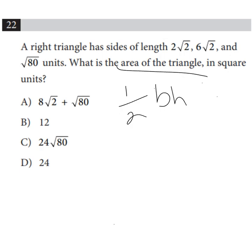They also give us that the right triangle has sides of length 2 times square root of 2, 6 times square root of 2, and square root of 80. Well, 2 times square root of 2 and 6 times square root of 2 are the legs.